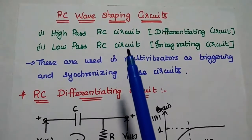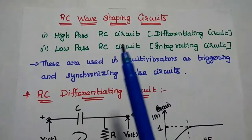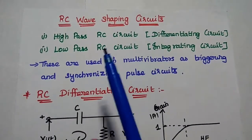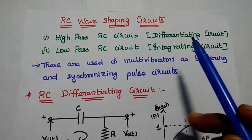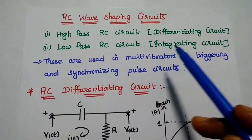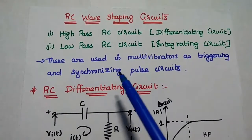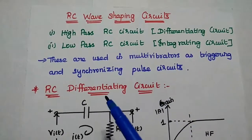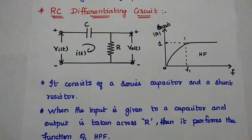Dear students, now we are going to discuss RC circuits in detail. There are two types of RC wave shaping circuits available. One is the high pass RC circuit, also known as the differentiating circuit. The next one is the low pass RC circuit, also known as the integrating circuit. These circuits are widely used in multivibrators as triggering and synchronizing pulse circuits. Let's discuss each type in detail here.